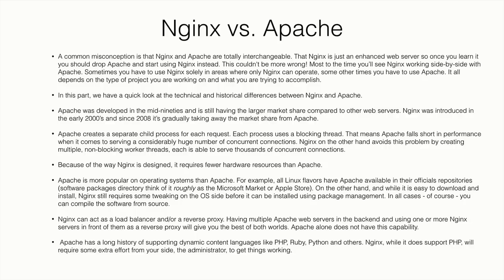A common misconception is that nginx and Apache are totally interchangeable and that once you learn nginx you should drop Apache entirely. This is wrong. Most of the time you will see nginx working side by side with Apache. Sometimes nginx is used solely in areas where only nginx can operate — serving large files, acting as a reverse proxy. Other times you will have to use Apache. It all depends on the type of project and what you are trying to accomplish.